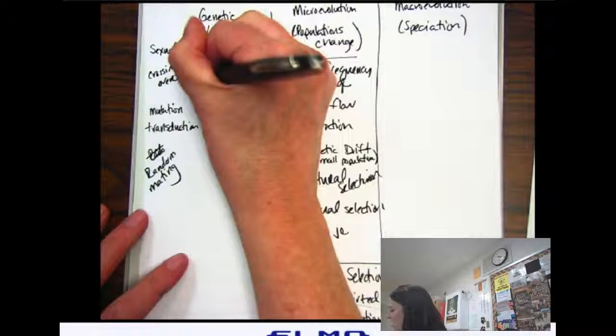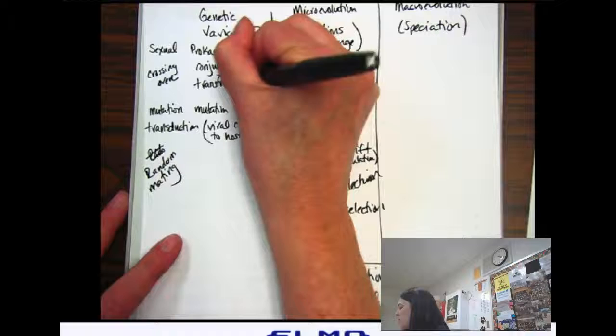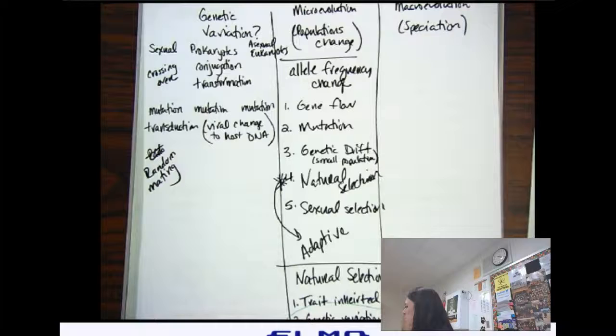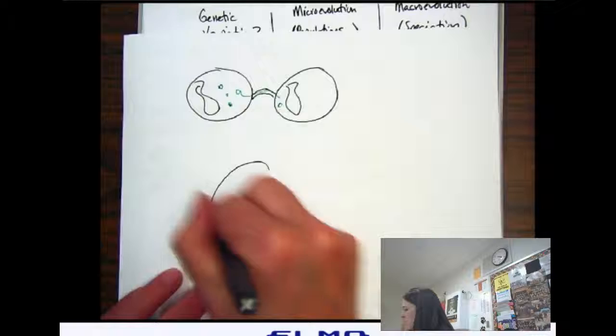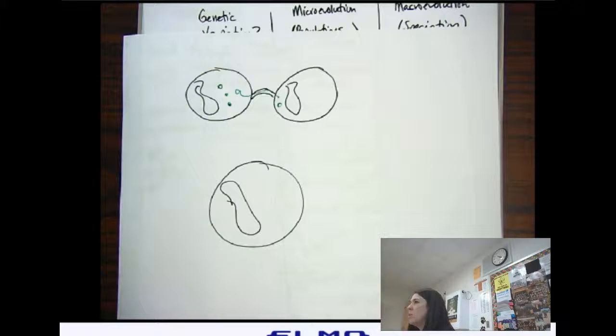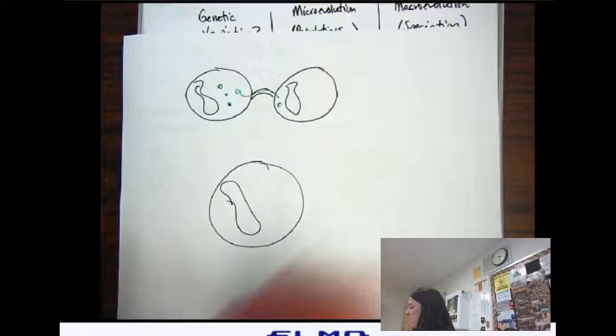Transformation. How is transformation different than conjugation? So this is conjugation. I'm only going to have one bacterial cell here for transformation. Where does the new DNA come from? Environment.